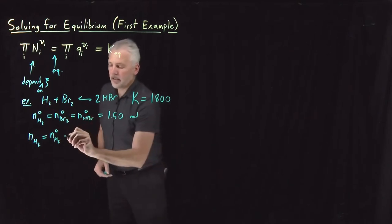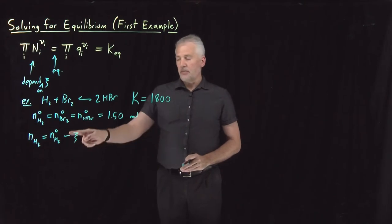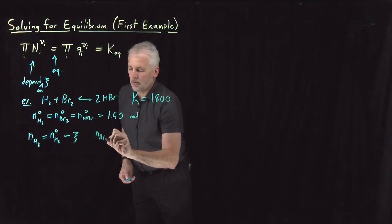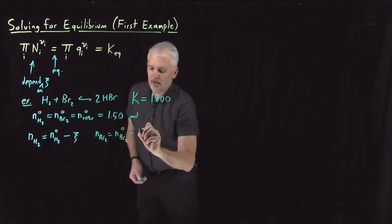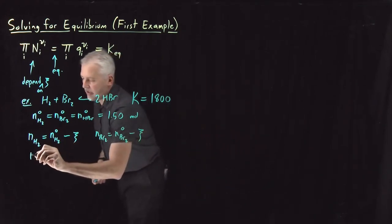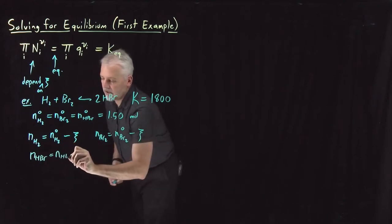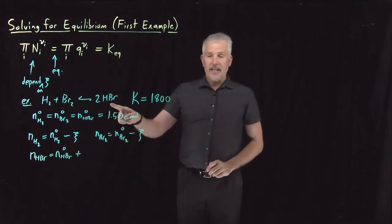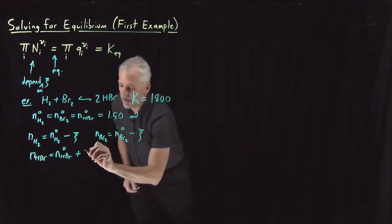After the reaction has proceeded some amount forwards or backwards, the number of moles of H₂ remaining will be however many we started with minus the extent of reaction, since H₂ is a reactant. Likewise, the number of moles of Br₂ is its initial amount minus the extent of reaction. HBr, on the other hand, is a product, so I gain HBr if the reaction goes forward — in fact, I gain two HBr, so I add twice squiggle (2ξ).